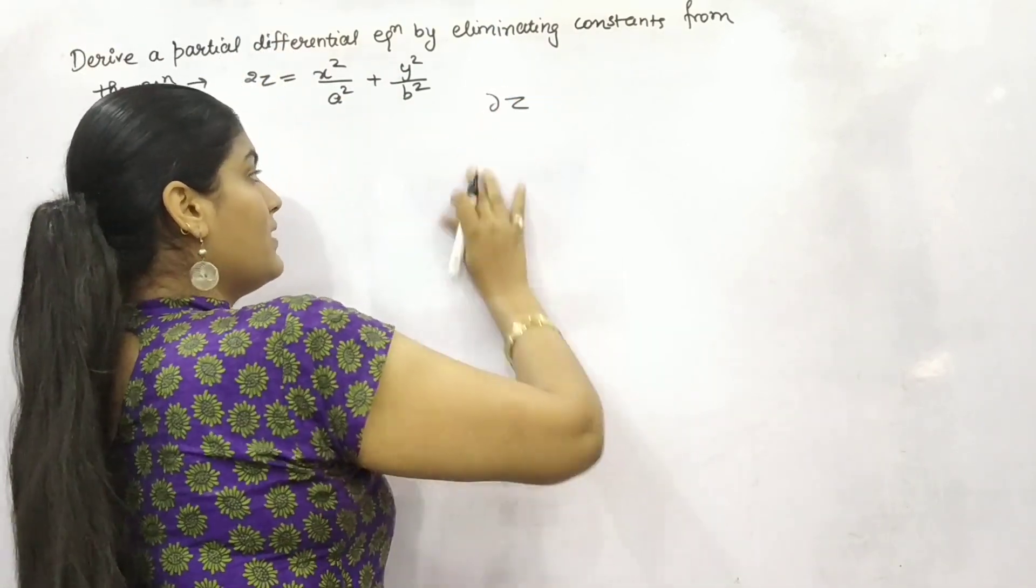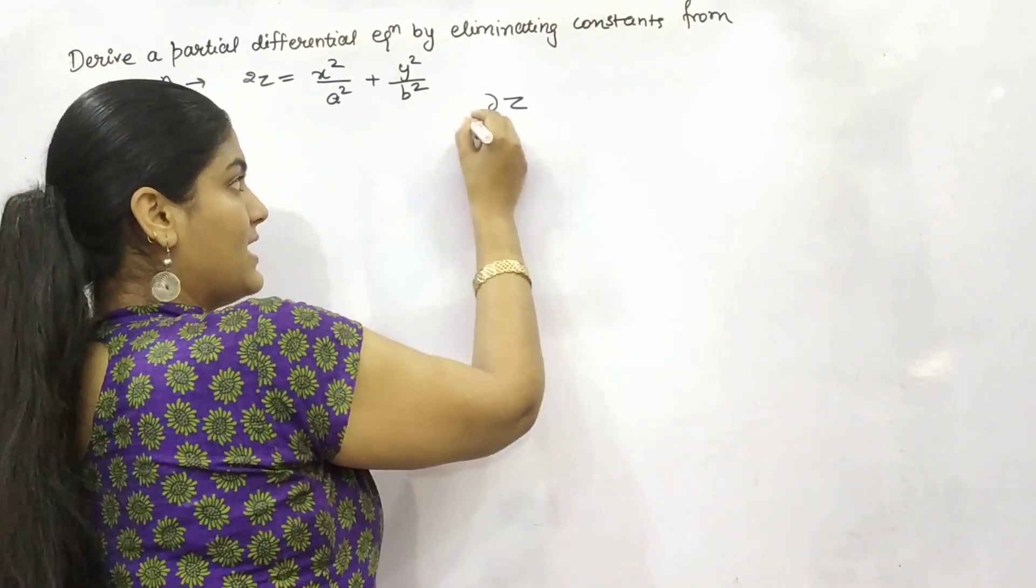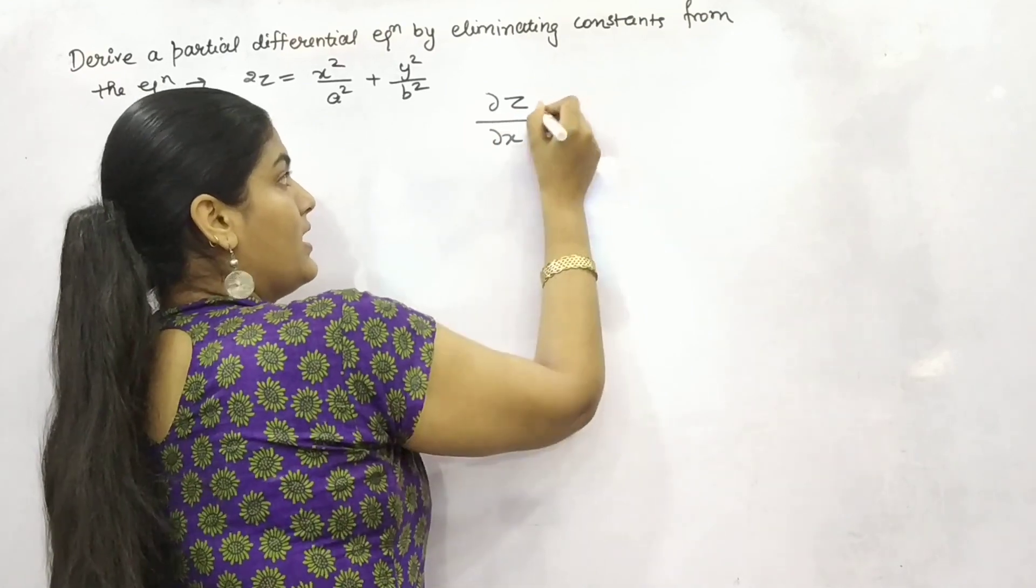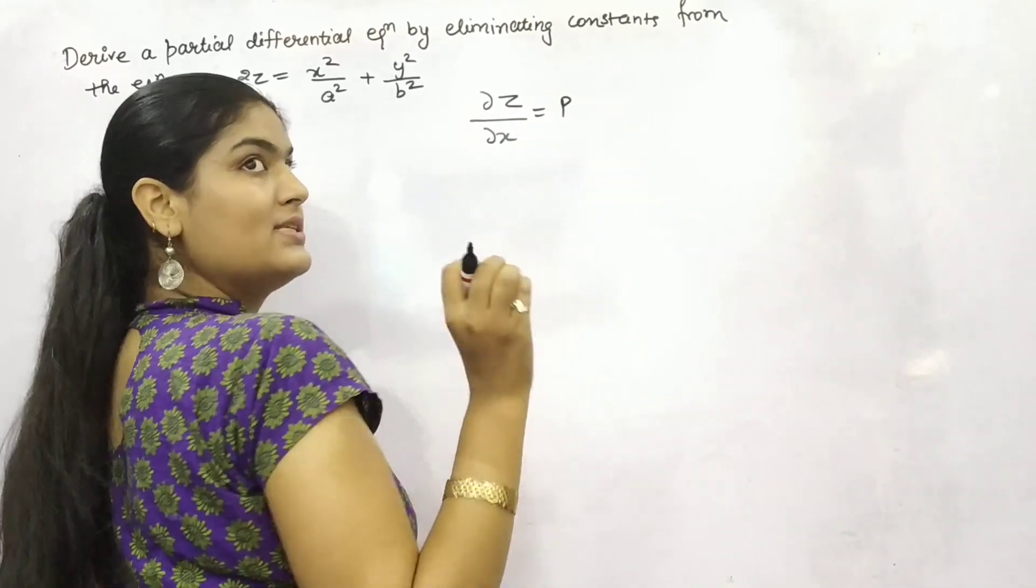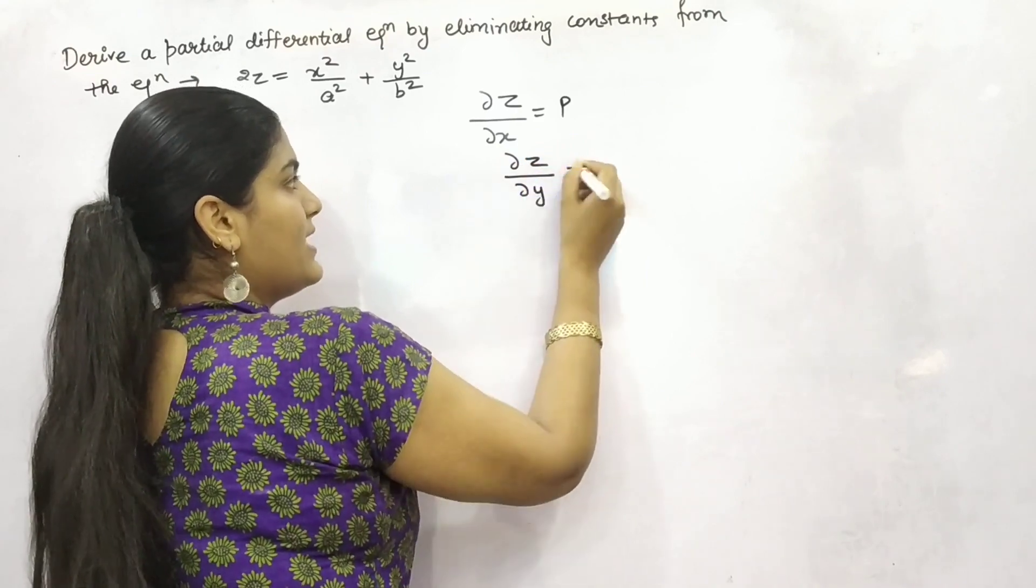If you are given with a function z and the partial differentiation of z with respect to x you are doing, then it is denoted as p, small p. Partial differentiation of z with respect to y is q.